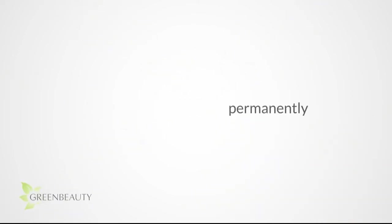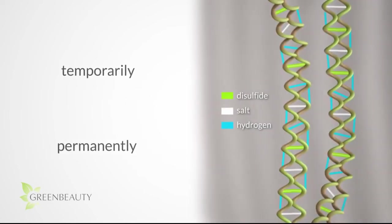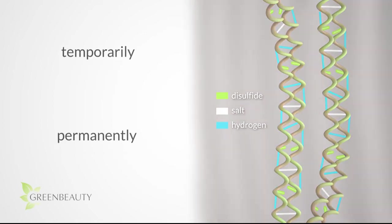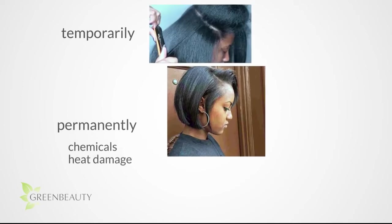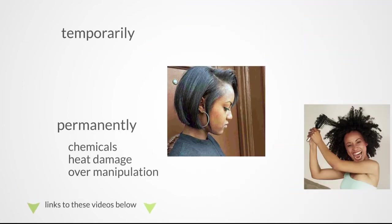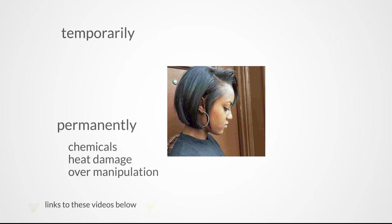As mentioned earlier, your curl pattern can be changed. So let's go over the two only ways to change your curl pattern, either permanently or temporarily. Changing your curl pattern requires you to permanently break the stronger disulfide bonds in your hair with chemicals, heat damage, or over manipulation. It's a risk because with the structure of your hair compromised, it's in a weaker, more vulnerable state.